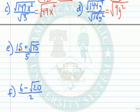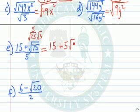What happens if we have a binomial in the numerator? Well, what we want to do is let's begin by simplifying the square root of 75. We can rewrite that as the square root of 25, which is a perfect square, times the square root of 3. What is the square root of 25? That would be 5. So that means we could rewrite this as 15 plus 5 times the square root of 3, all divided by 5.